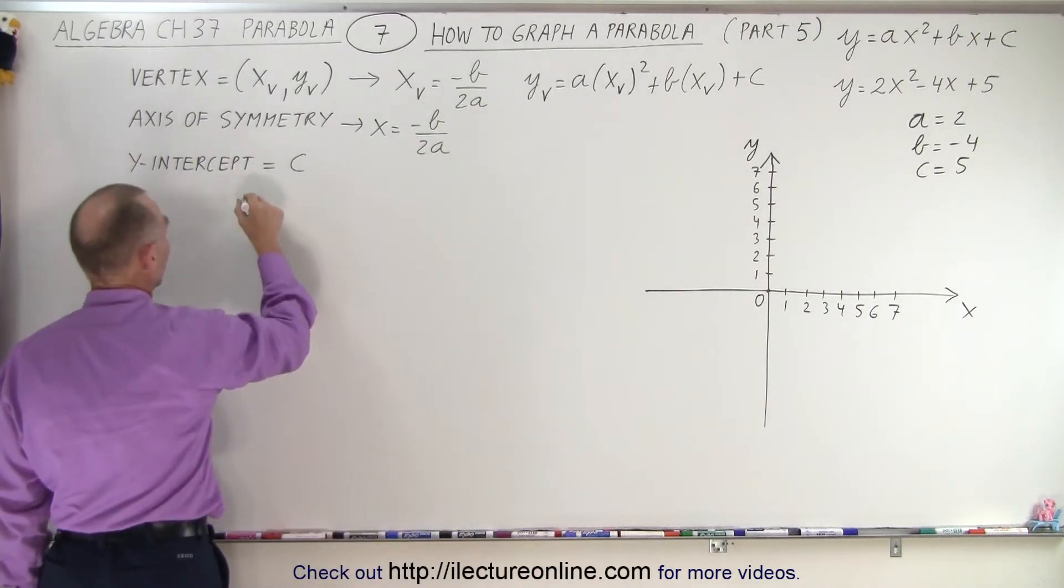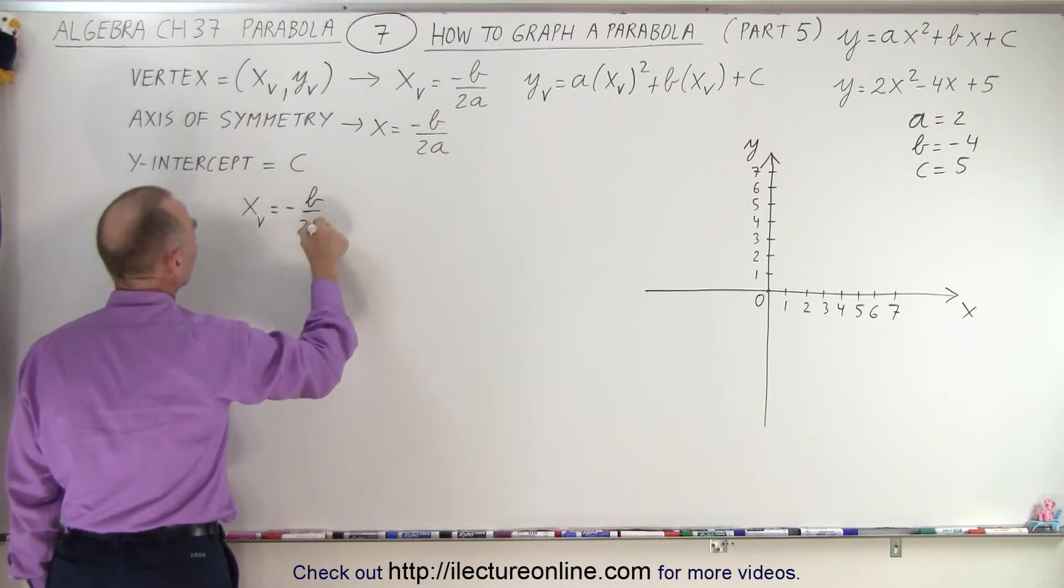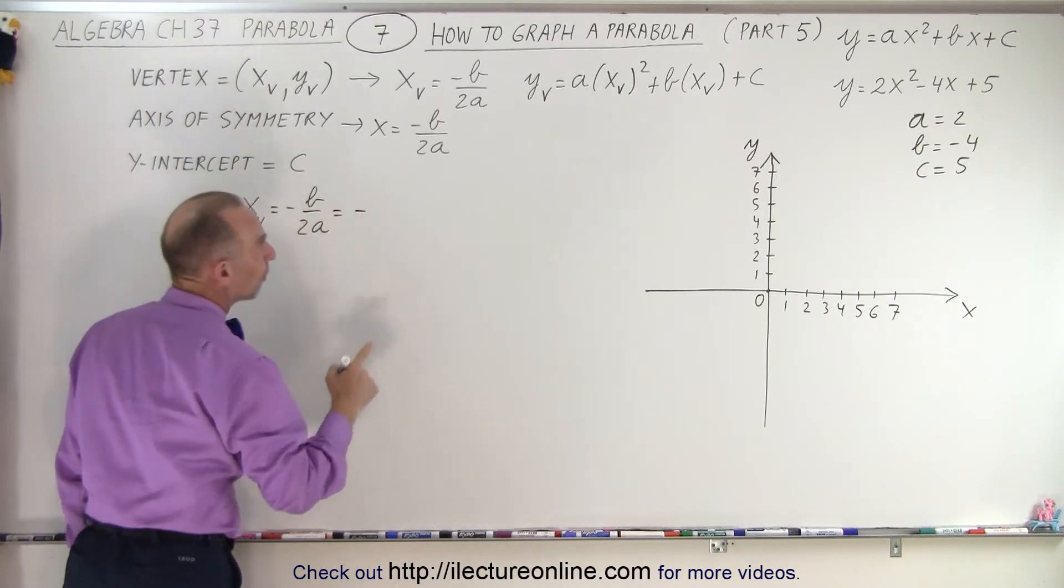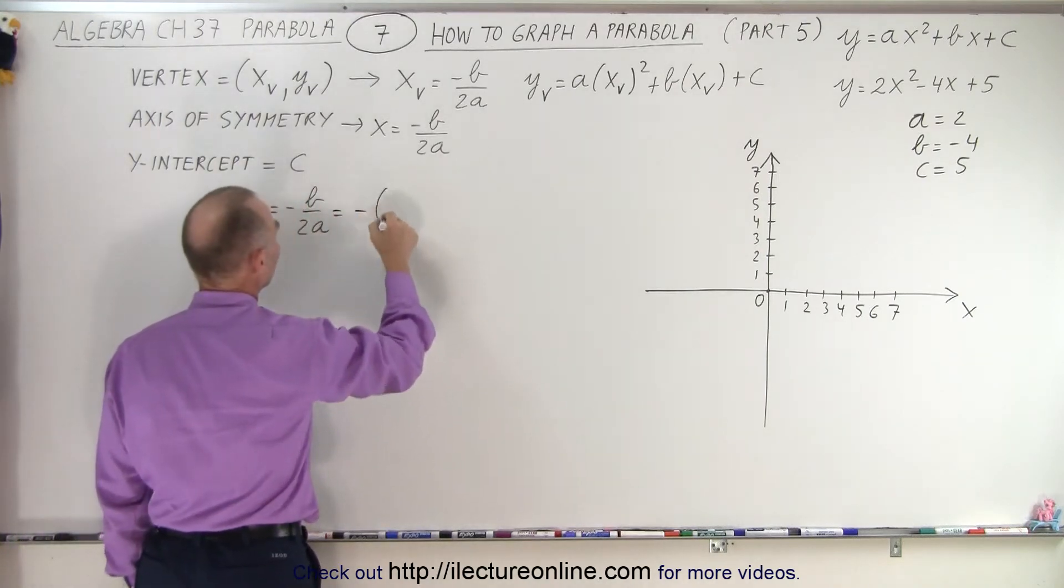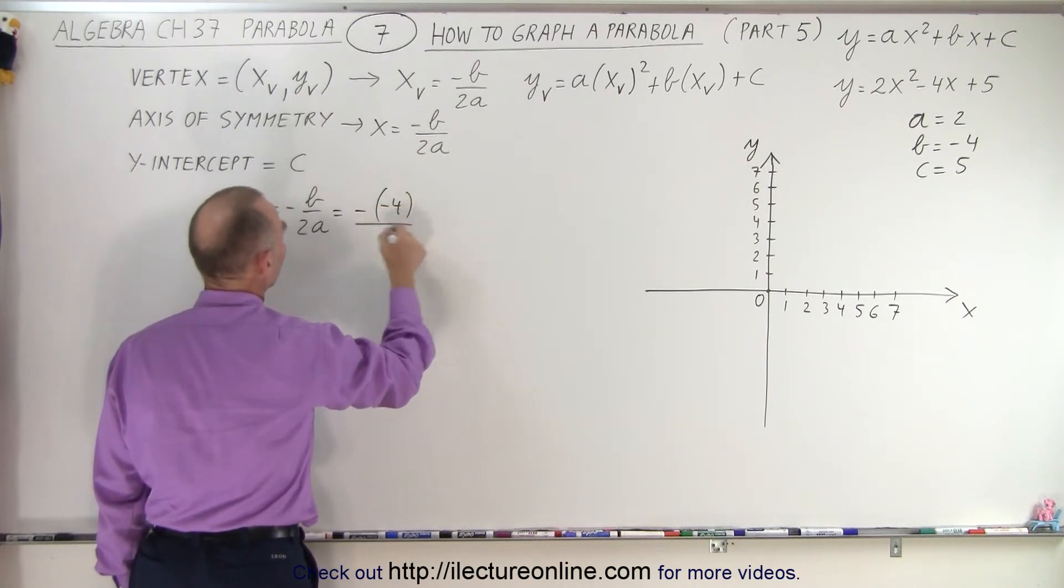The vertex, we first want to find the x-coordinate of the vertex, which is equal to minus b over 2a. And so that's equal to minus b is a negative 4, so negative times a negative 4, divided by 2 times a, and a in this case is 2.